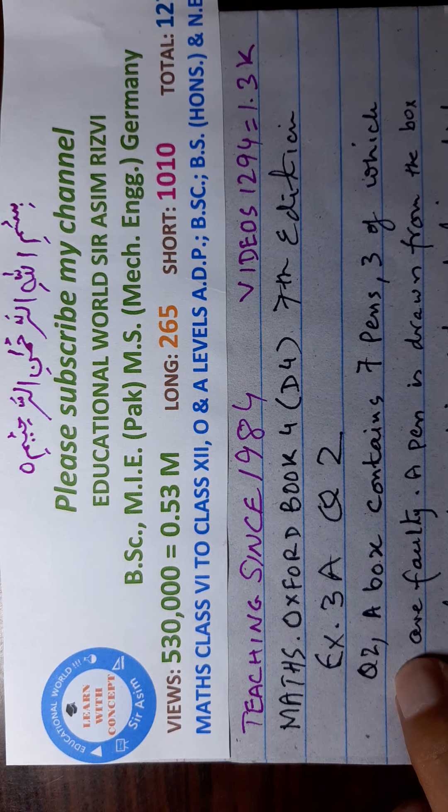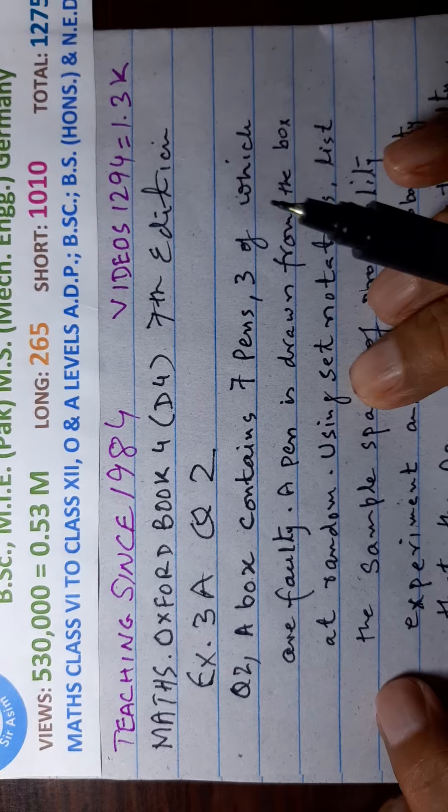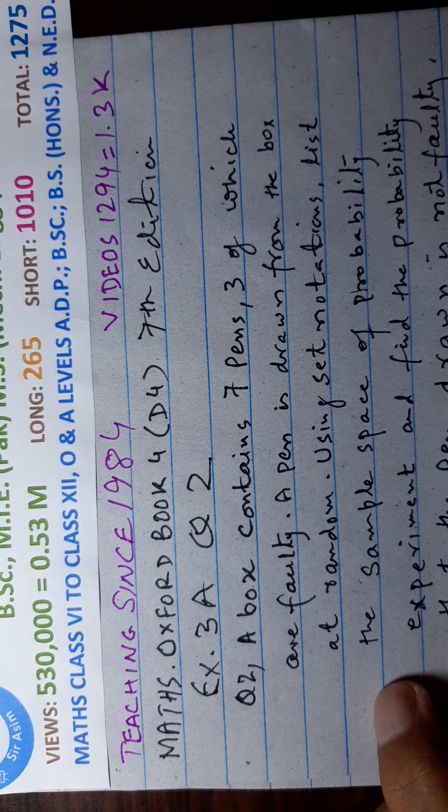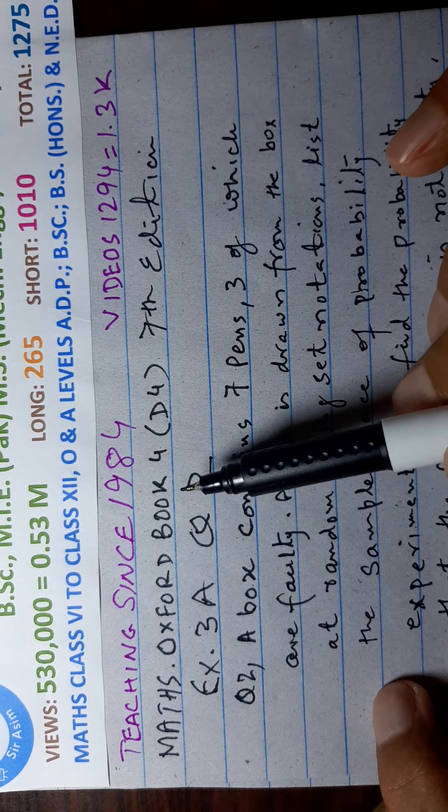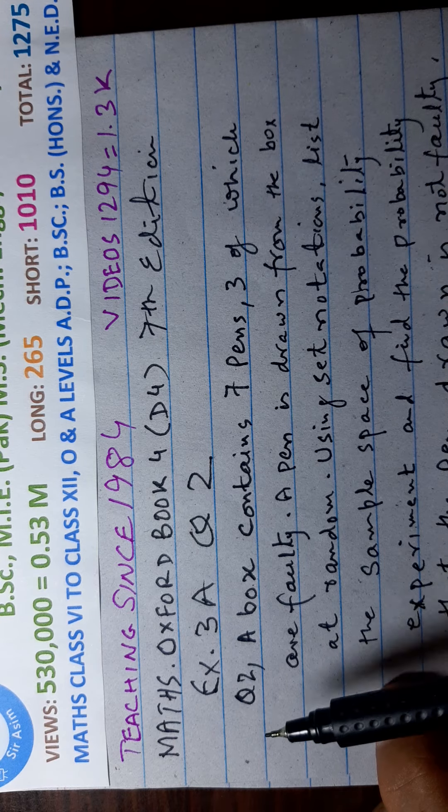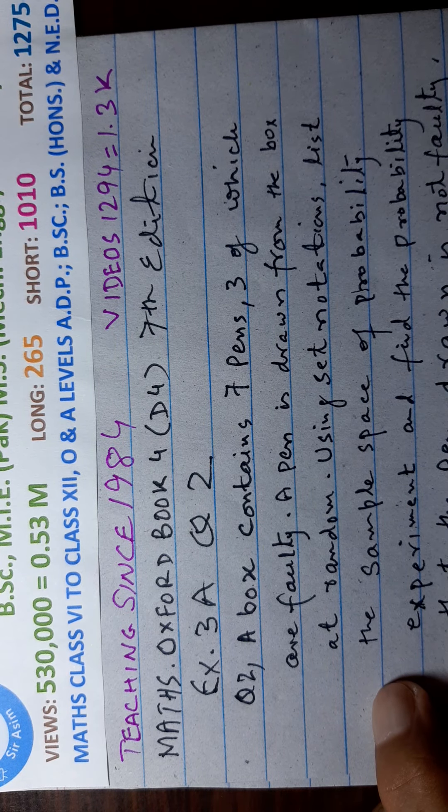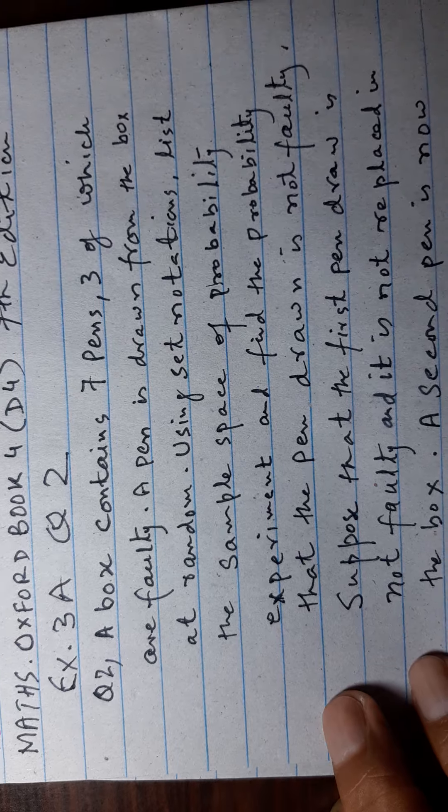Bismillahirrahmanirrahim. Today we are doing probability. This is Oxford Book 4D4, seventh edition, Exercise 3, Question Number 2. This is sum of probability and here is given.